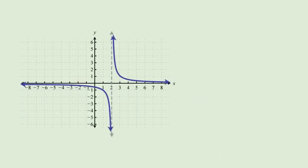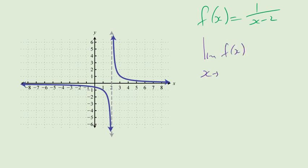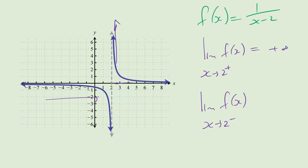Here's a function with a vertical asymptote — that gives us x minus 2. The limit of f of x as x approaches 2 from the right: the graph shoots up to plus infinity. The limit as x approaches 2 from the left: the graph shoots down to minus infinity. So what is the limit of f of x as x approaches 2?